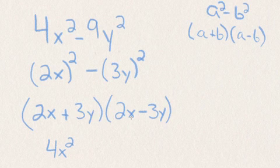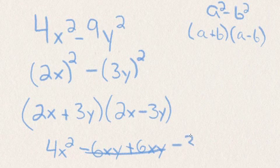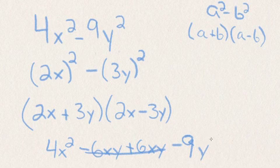Our outer term 2x and negative 3y is negative 6xy. Our inner term gives us positive 6xy minus 6 plus 6 cancels out and the last term. The last term positive 3 times negative 3. Positive times negative is negative.